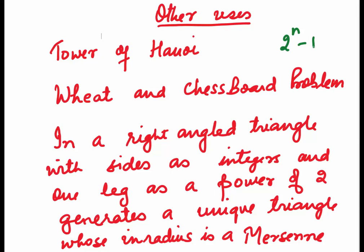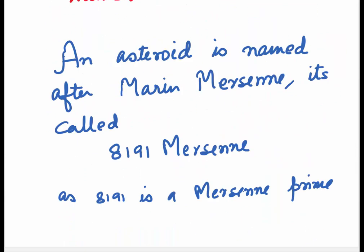In another game, wheat and chessboard problem they are used. In a right-angled triangle with sides as integers and one leg as a power of 2, if we draw this triangle, then this generates a unique triangle whose inradius is a Mersenne number.